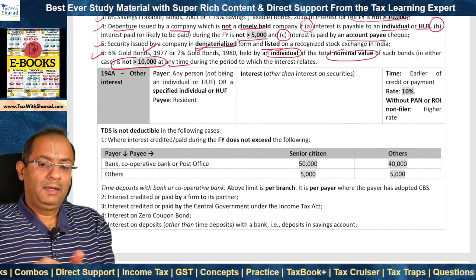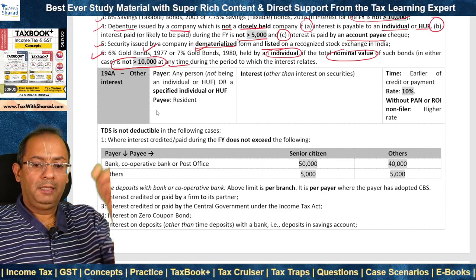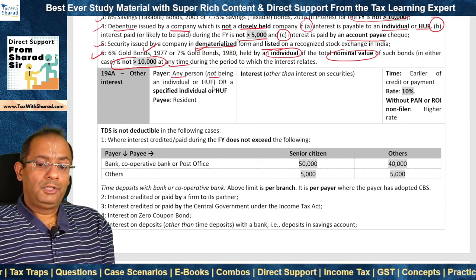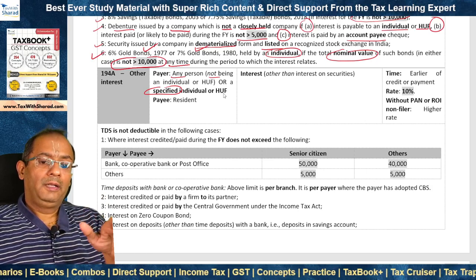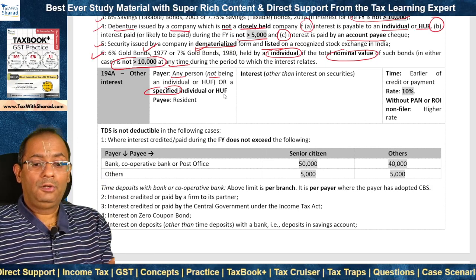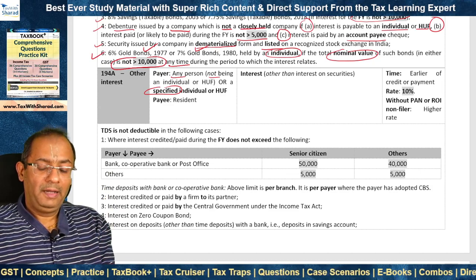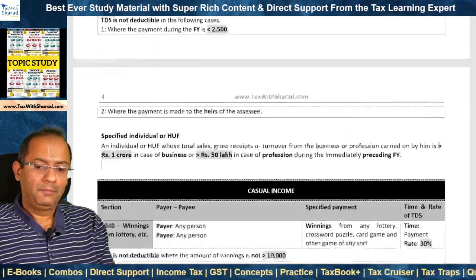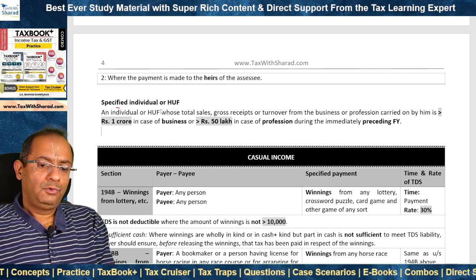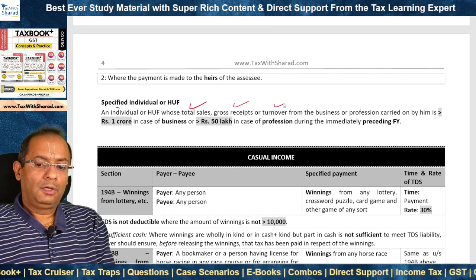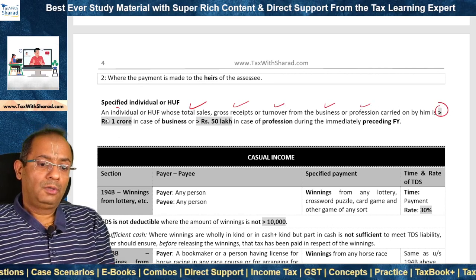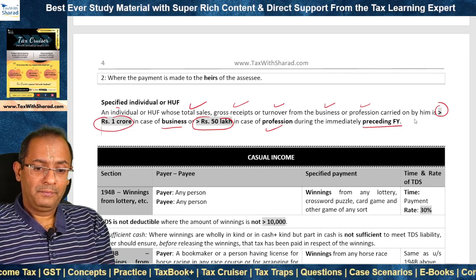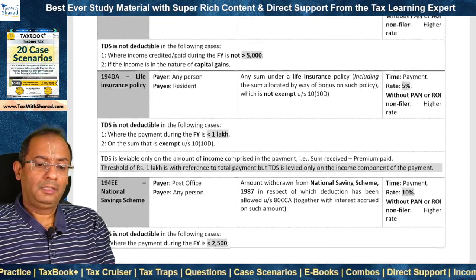Section 194A deals with other interest — interest other than interest on securities covered under section 193. The payer should be any person not being an individual or HUF, or if it is an individual or HUF, the payer should be a specified individual or HUF. A specified individual or HUF is one whose total sales, gross receipts or turnover from business or profession is more than Rs. 1 crore in case of business, or more than Rs. 50 lakh in case of profession, during the immediately preceding financial year.